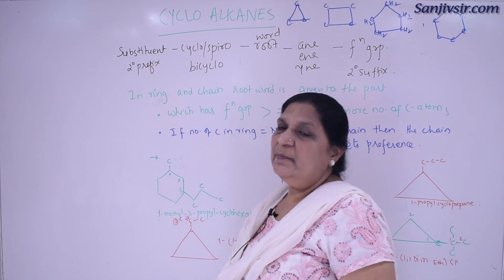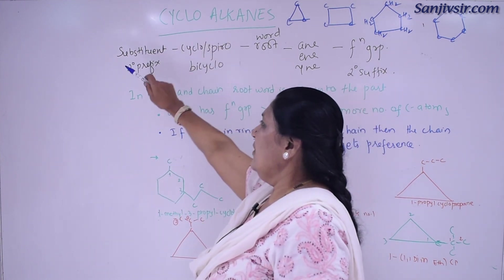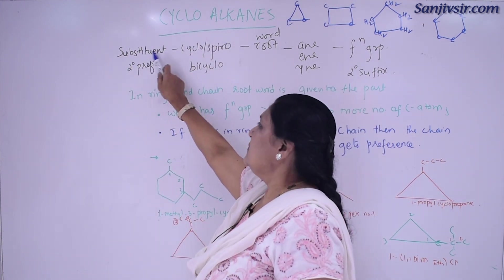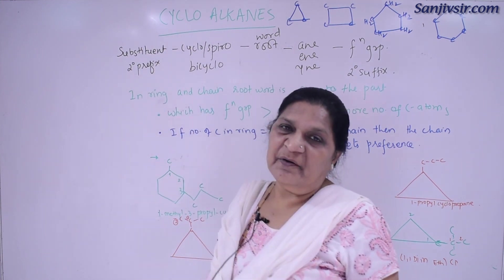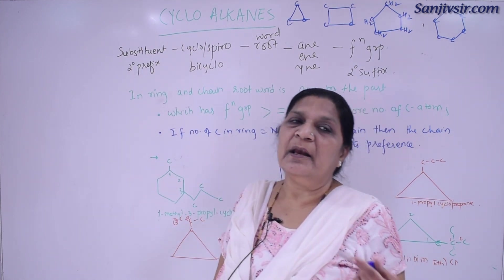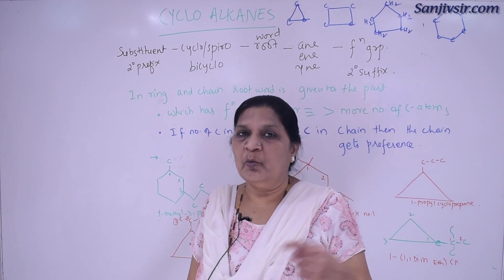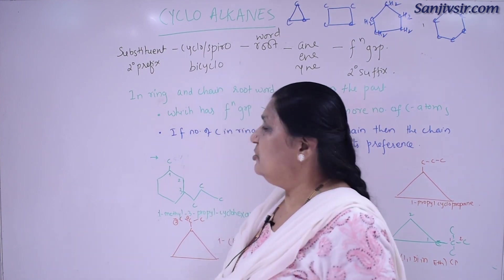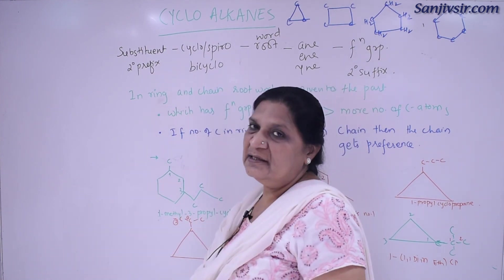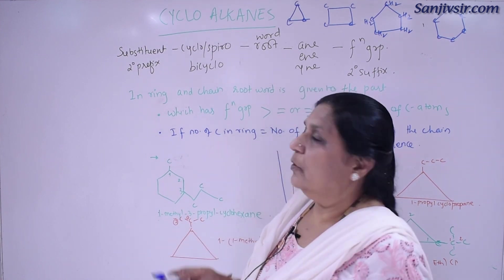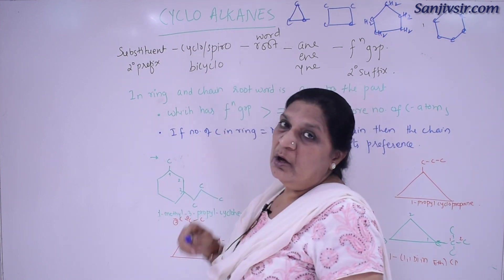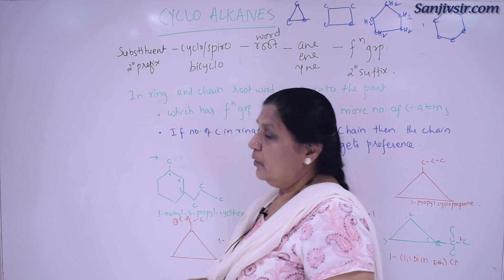We have studied basically that in the name we go in this manner: substituent — which is the secondary prefix — that is ethyl, methyl, propyl, nitro, chloro, bromo, iodine. The substituent is the secondary prefix. If there is cyclic nature, then we write cyclo, spiro, or bicyclo.